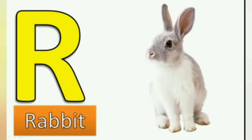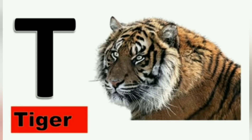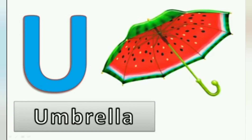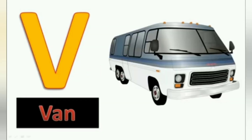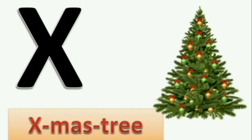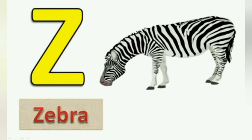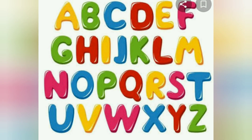Q for queen. R for rabbit. S for sheep. T for tiger. U for umbrella. V for van. W for watch. X for Xmas tree. Y for Yak. Z for Zebra.